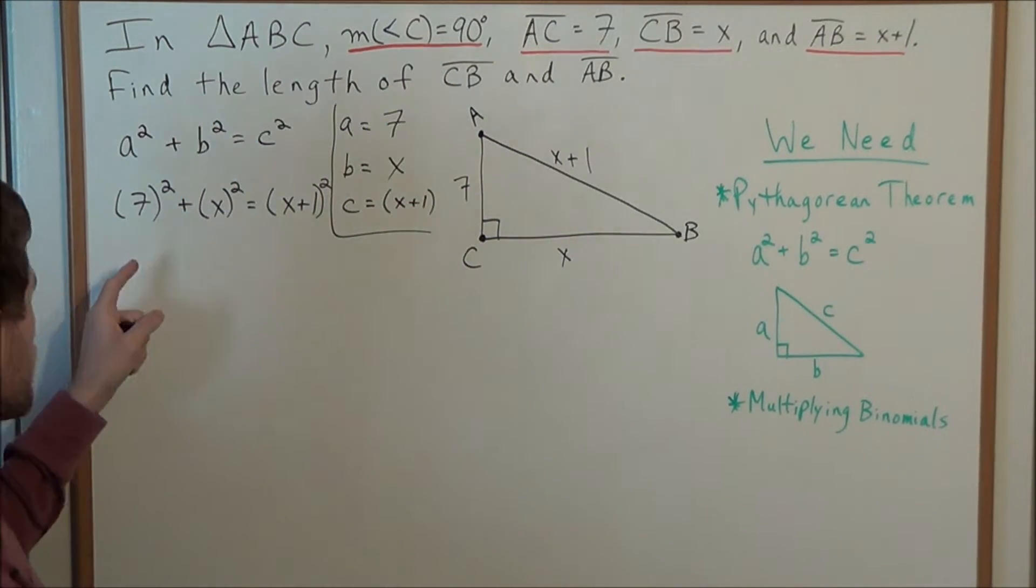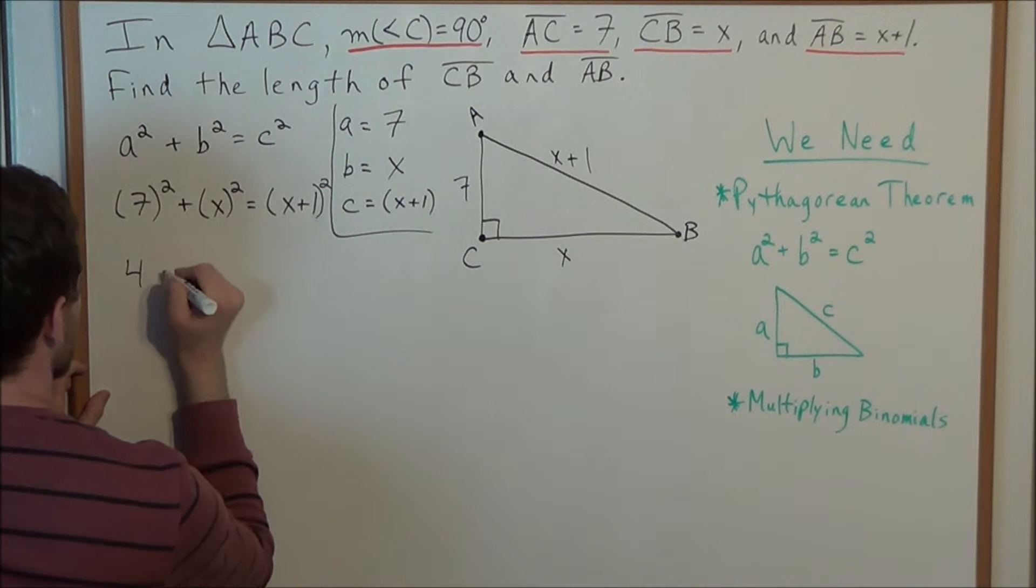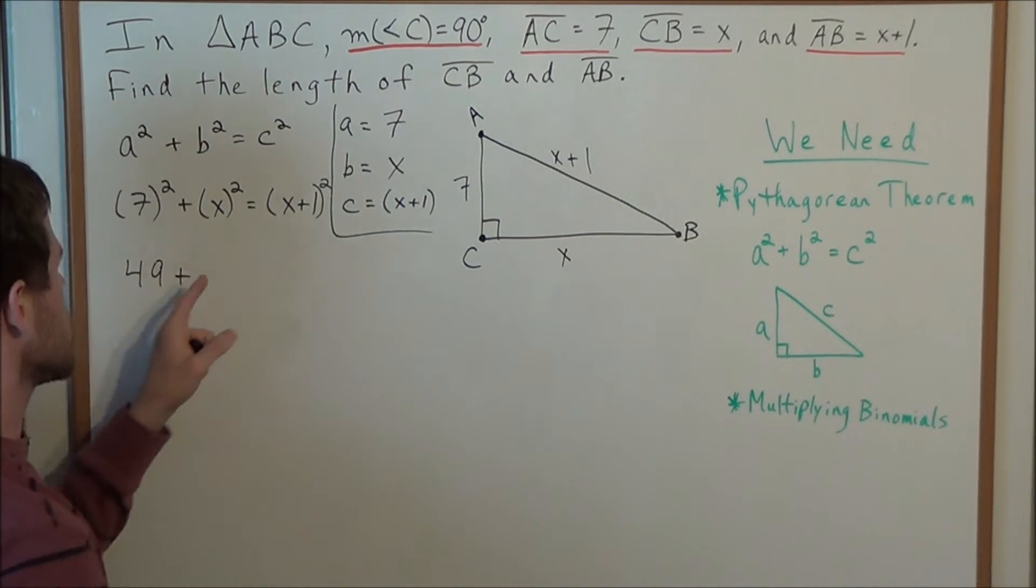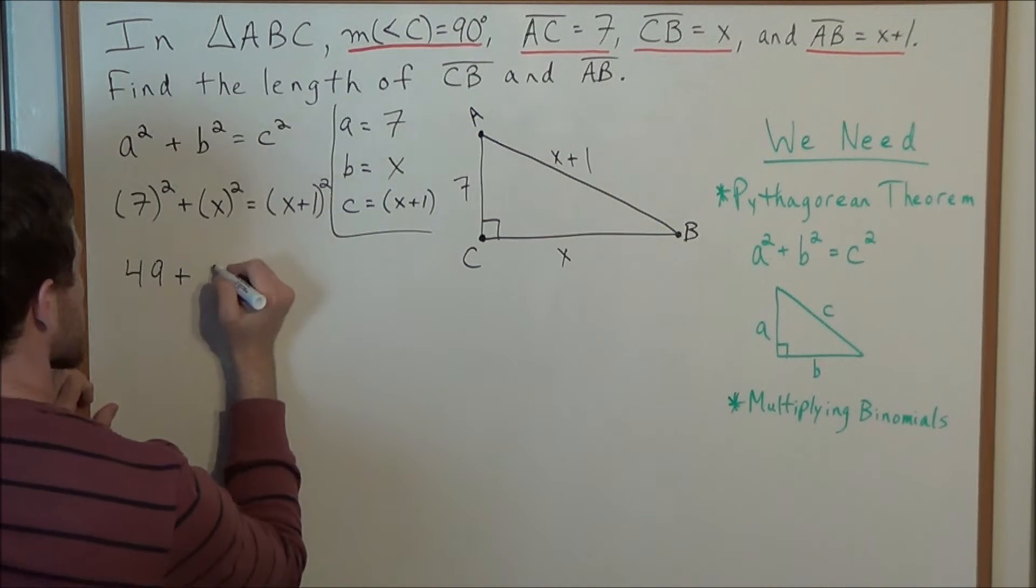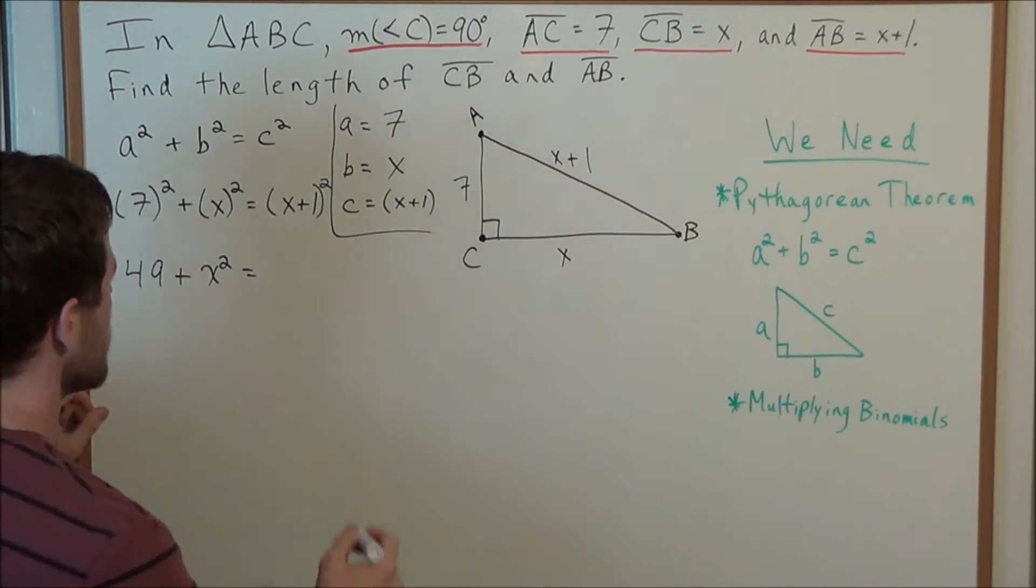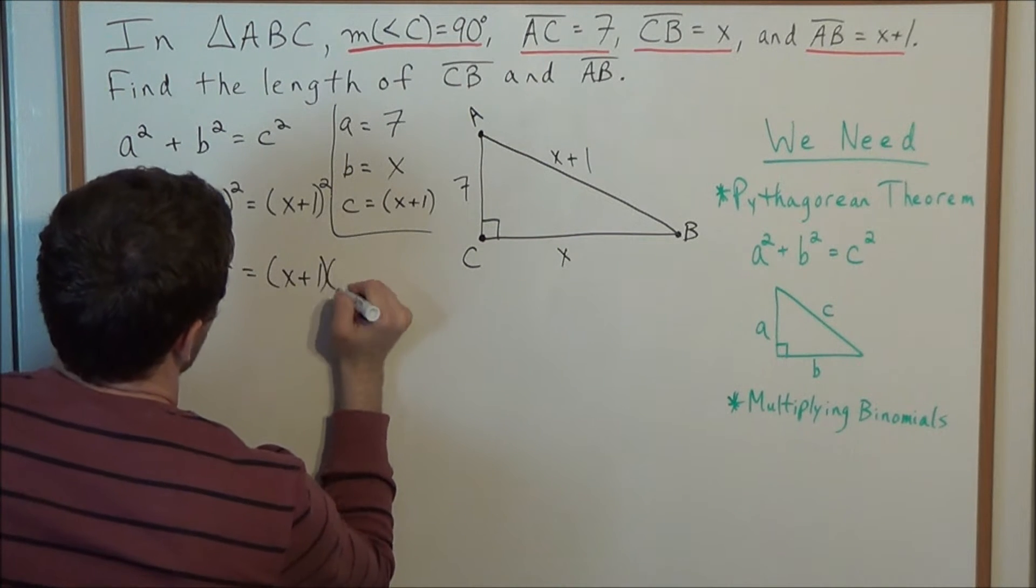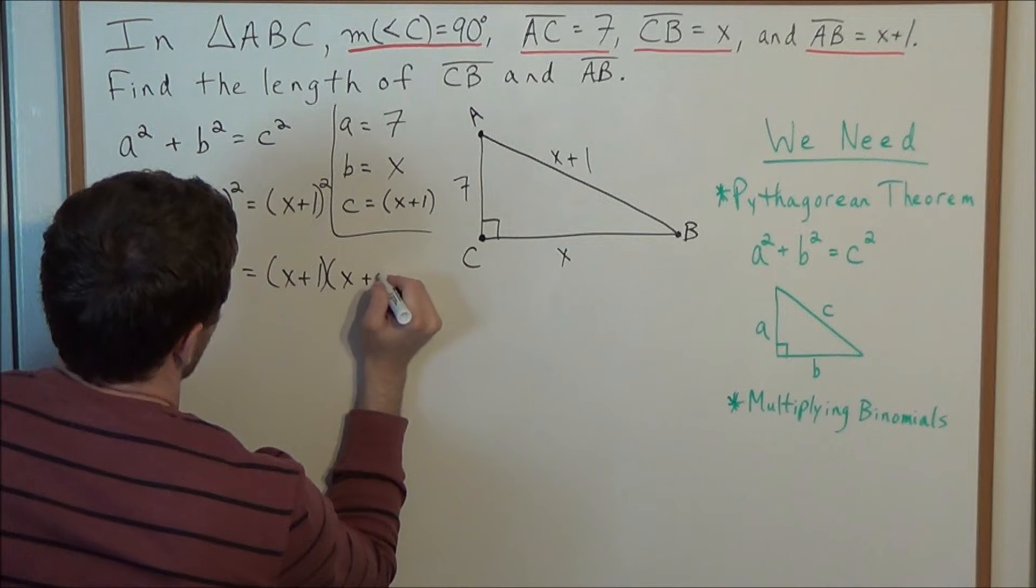And now we could simplify this line. Well we have 7 squared, this is 49, so we have 49 plus X squared is just X squared. And now X plus 1 squared we could write as the product of 2 binomials. So this is really just X plus 1 times X plus 1.